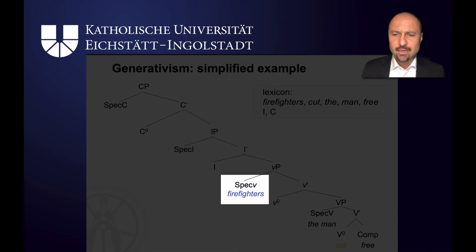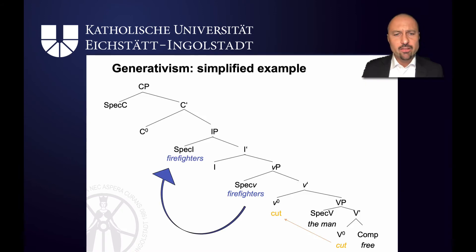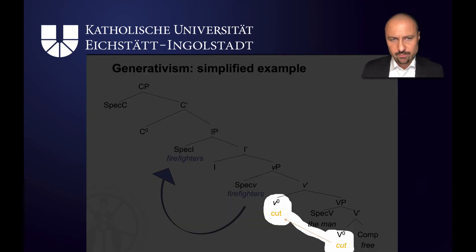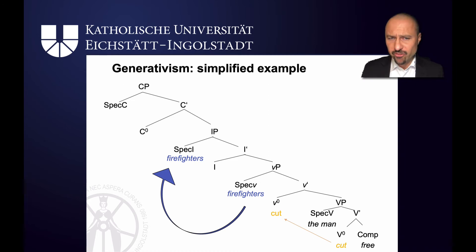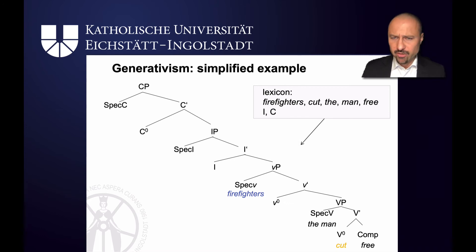Firefighters goes into the specifier of little VP, the man goes into the specifier of VP, and cut goes into the verbal slot. After that, you have structure-changing operations that move elements — for example, moving firefighters to the specifier of the inflection phrase where it would check agreement, and cut moving into the little v position. There's no way I can do justice to a full-fledged minimalist approach here, but it's important that for this to work — for 'firefighters cut the man free' — you need to adopt a lexicalist approach. So before you enter cut into this tree structure and start combining in a merge one-by-one structure, cut must already be complex transitive. That's what a lexicalist approach means: this special complex transitive meaning of cut must already be done in the lexicon.